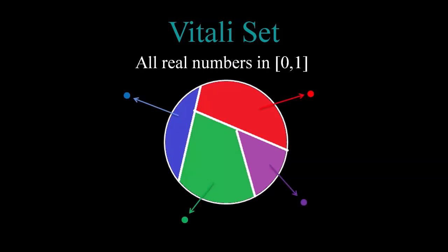Now to put together a Vitali set, we choose one real number from each equivalence class and put them all together into a set, which we shall call V for Vitali. And this is our Vitali set, that's all there is to it.